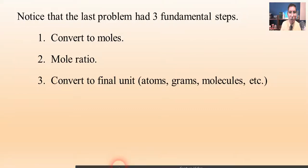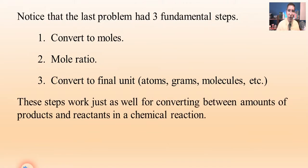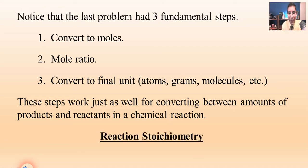Welcome back to AP Chemistry. I'm Jeremy Krug, and we're continuing with our lesson on reaction stoichiometry. In our last video, we looked at three fundamental steps of a stoichiometry problem. Step one is convert to moles, step two is mole ratio, and step three is convert to the final unit. The reason that we're interested in this so much is that these steps work very well for converting between amounts of products and reactants in a chemical reaction. This is what we're going to be calling reaction stoichiometry in this video.